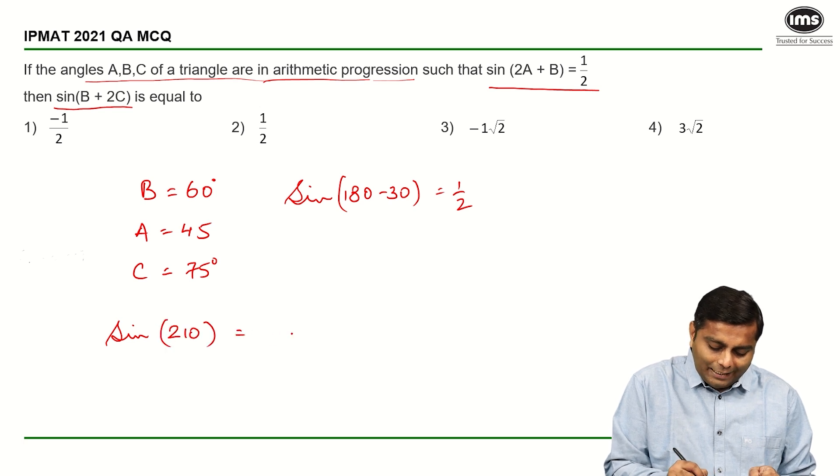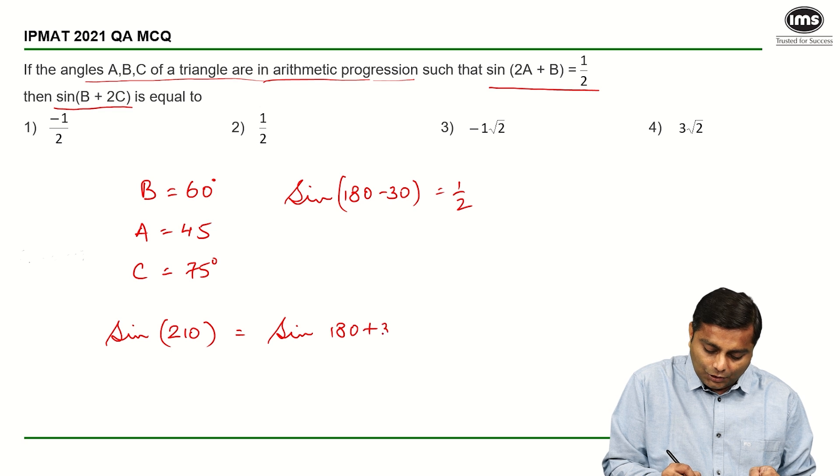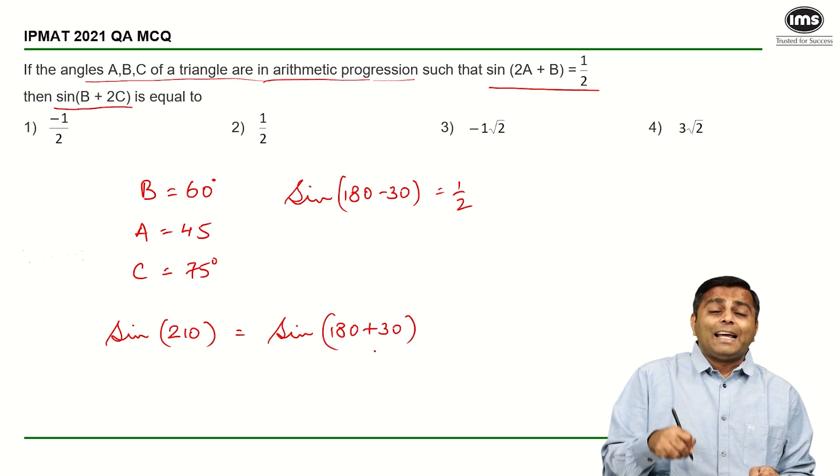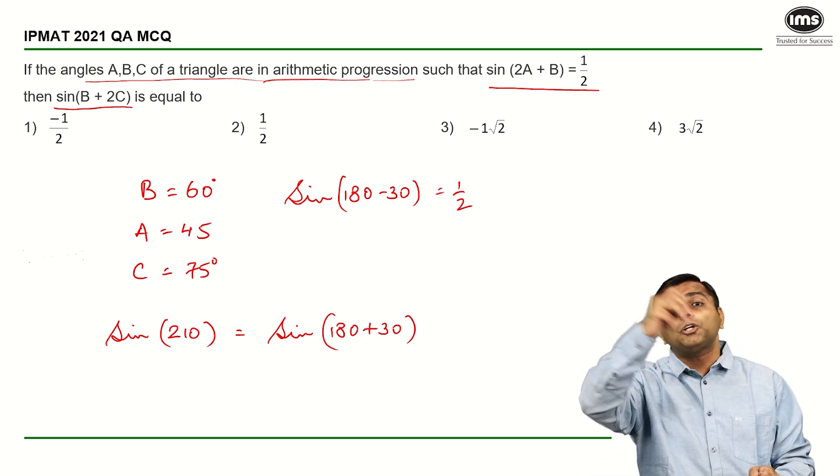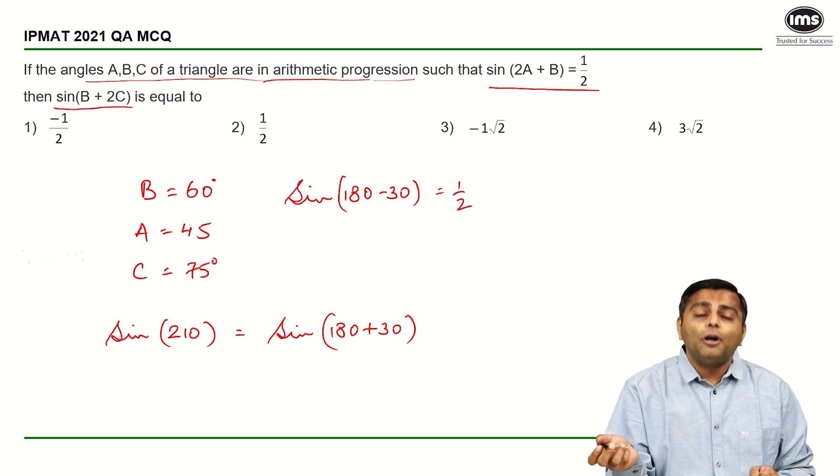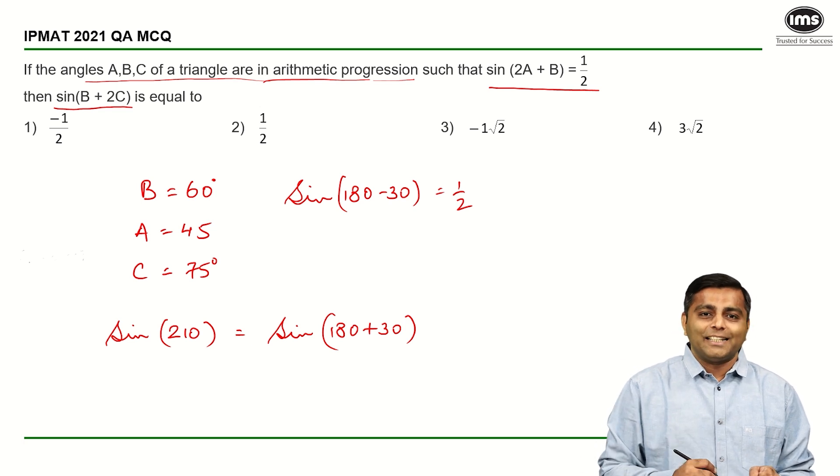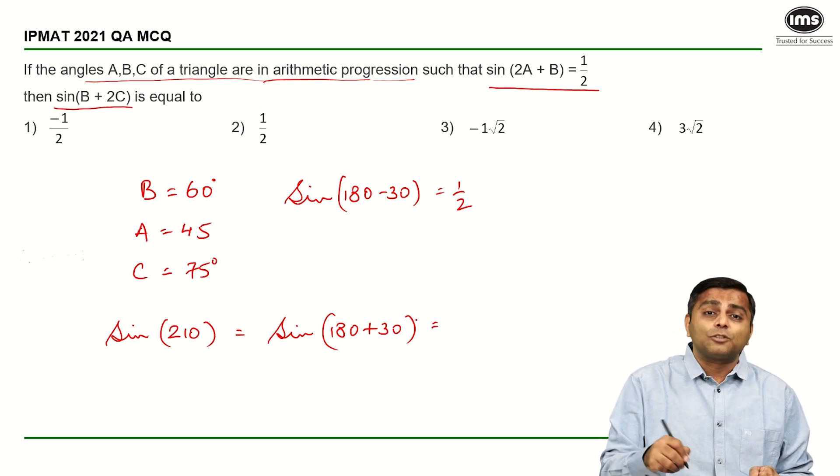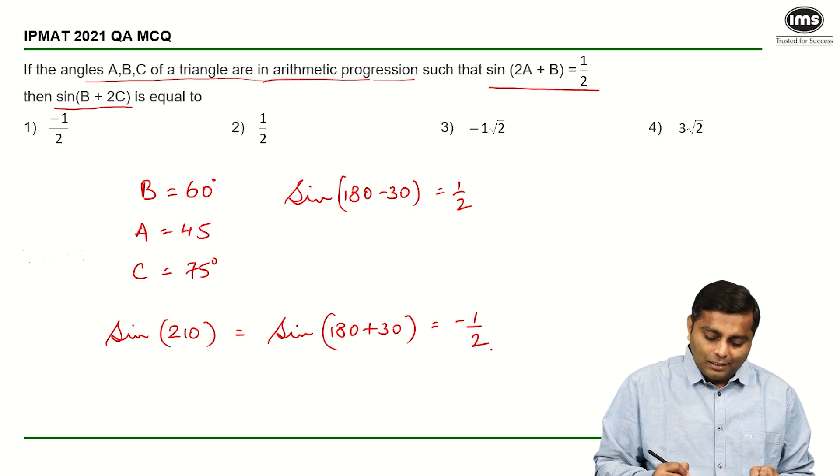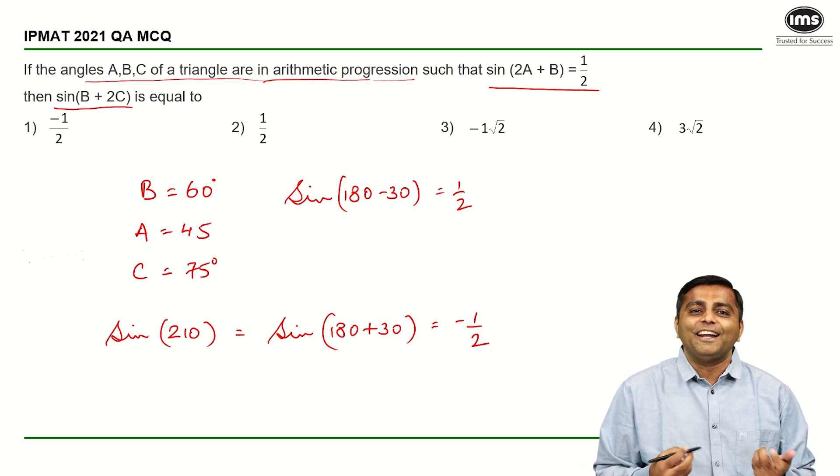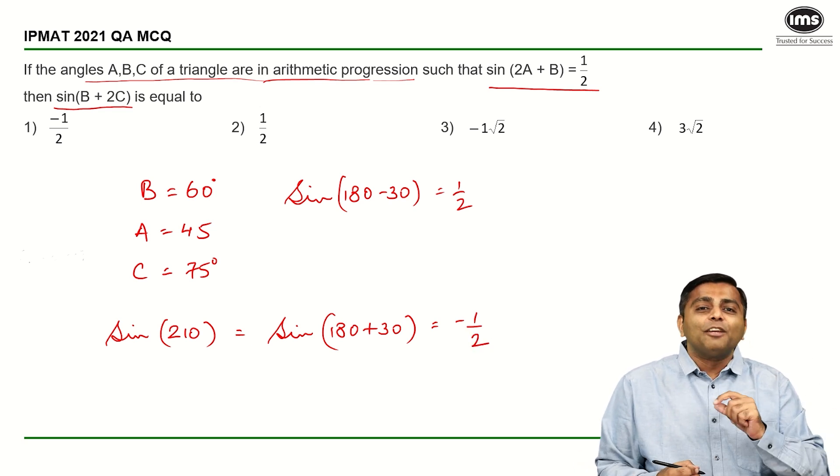Sine of 210 is nothing but sine of 180 plus 30. Now sine of 180 plus 30 takes us to the third quadrant. In third quadrant sine is not positive, sine is negative. So sine of 30 is going to be this time minus half, and that's about it, that's our answer.